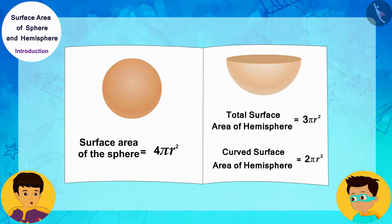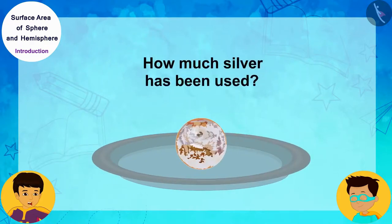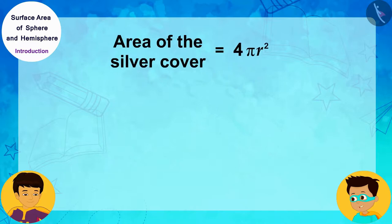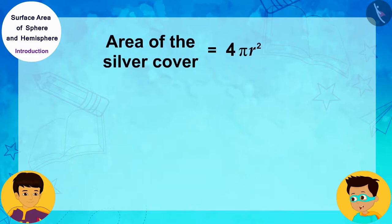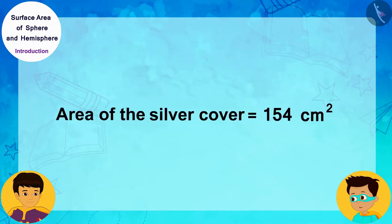You forgot all about your original question in the whole sphere and hemisphere discussion. Come on! Now quickly find out how much silver has been used to cover this spherical sweet. Oh yes! I will solve this quickly by writing the radius of the spherical sweet, 3.5 cm, instead of R in the formula for the surface area of this sphere. Look! This spherical sweet has been covered with 154 square centimeters of silver.